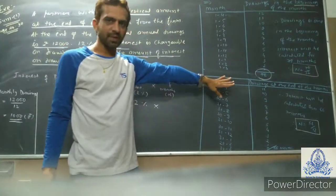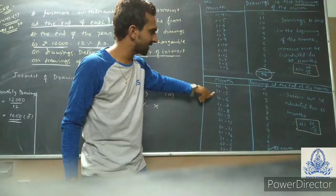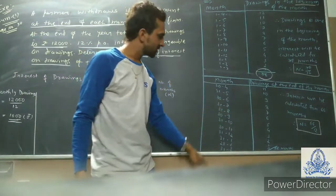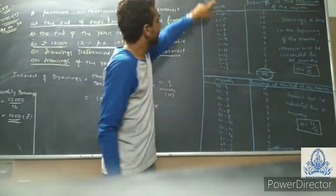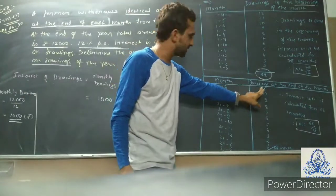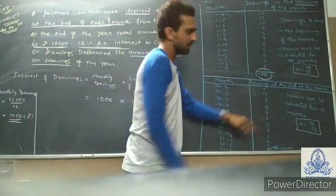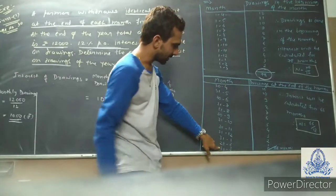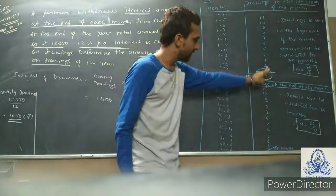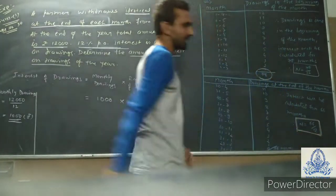For drawings at the end of each month: April ends on 30th April — that is 11 months remaining to 31st March. May ends on 31st May — that is 10 months. June ends on 30th June — that is 9 months, and so on. The last withdrawal on 31st March to 31st March gives zero months. When we total all these months, that comes to 66 months. So for end-of-month drawings, the factor is 66 divided by 12.